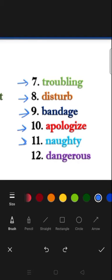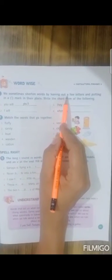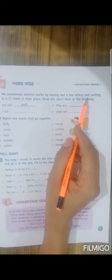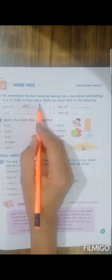Next word, Naughty, N-A-U-G-H-T-Y. And the last word, Dangerous, D-A-N-G-E-R-O-U-S. Exercise E part. We sometimes shorten words by leaving out a few letters and putting in an apostrophe mark in their place. Write the short form of the following. The first one has been done.